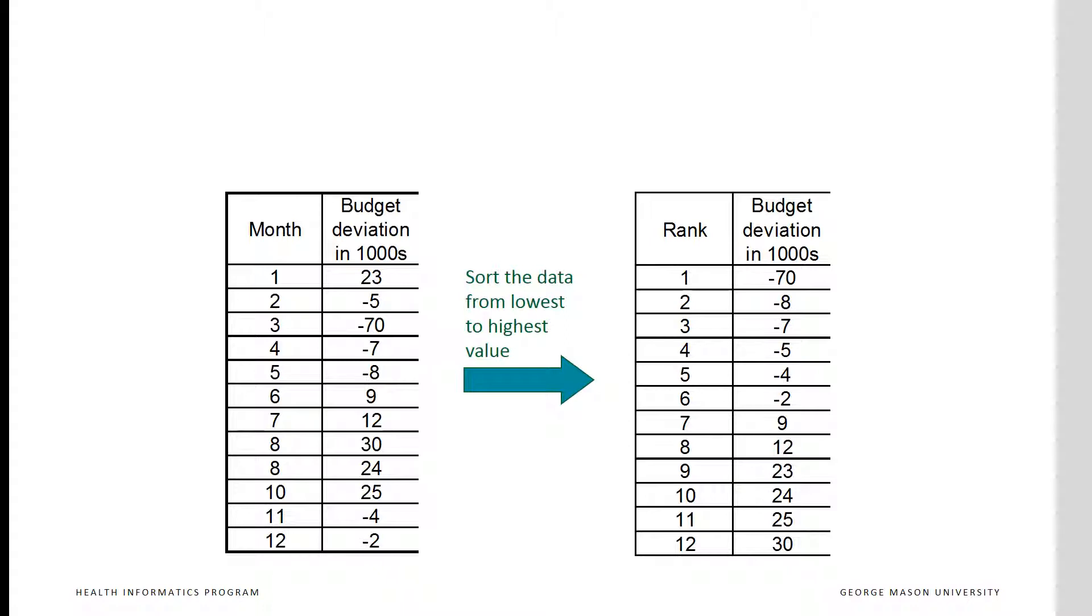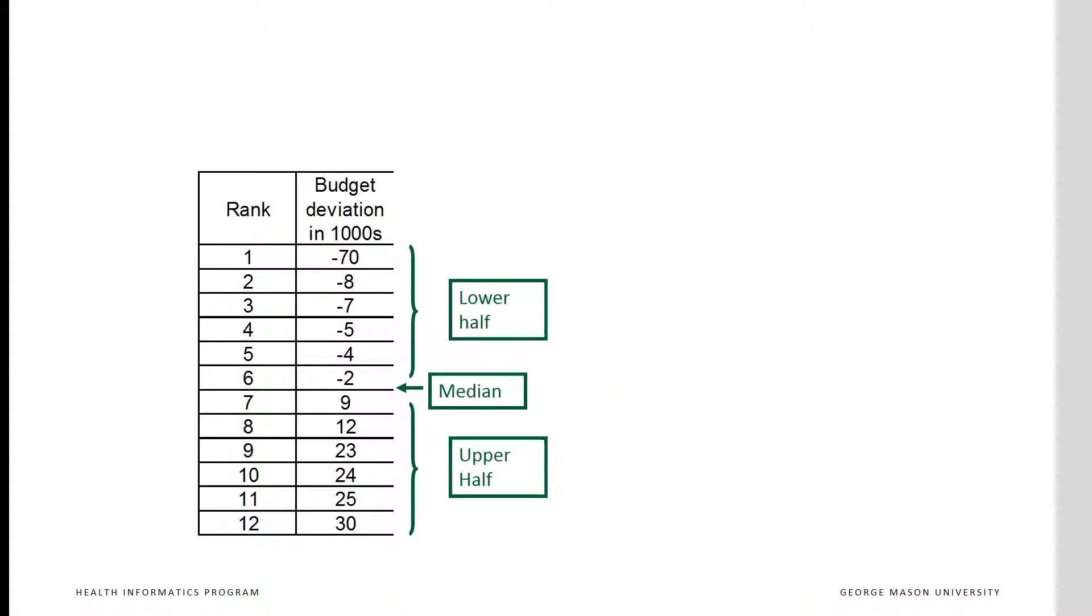Notice how the rank order of the observation changes. There are 12 points, so the median is halfway between the sixth and seventh ranked data points. Therefore, the median is not included in the lower and upper data set because it's not an actual value in the data.